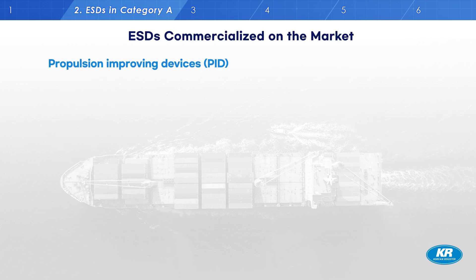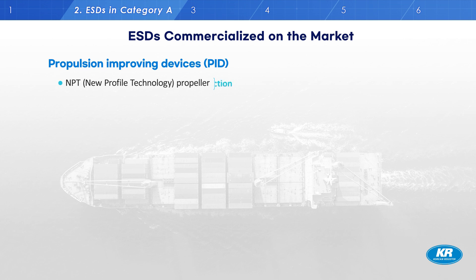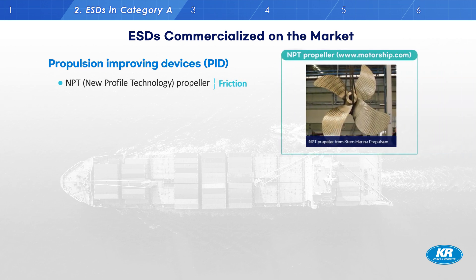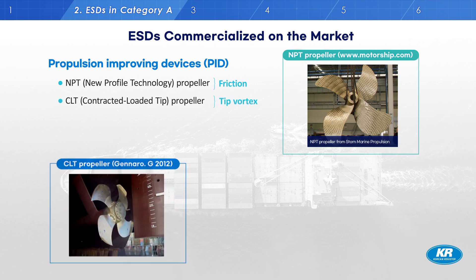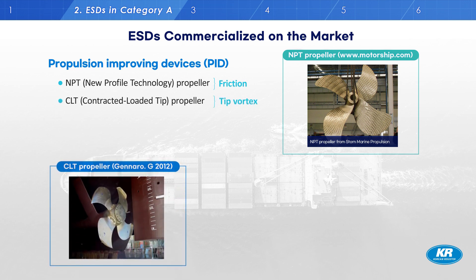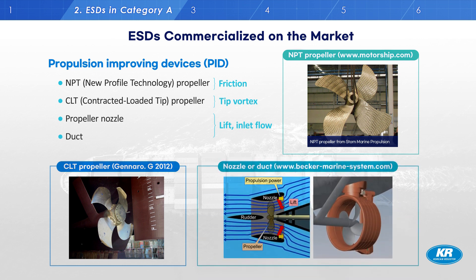Continuing to look at propulsion-improving devices, both the NPT and CPT propeller are direct changes to the propeller. Similarly, a propeller nozzle and duct, installed near the propeller, helps to improve propulsion power by controlling the propeller inflow.